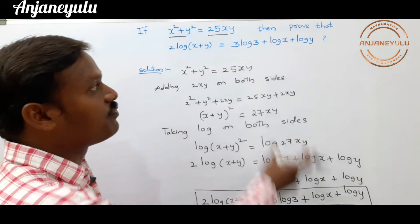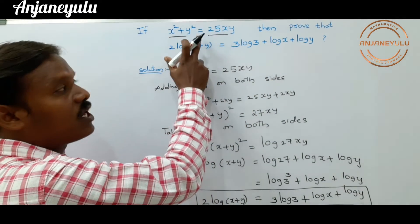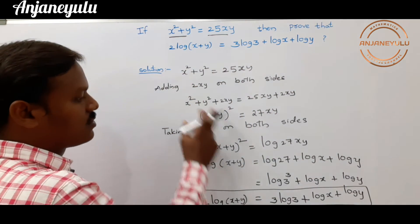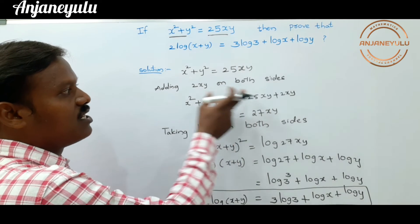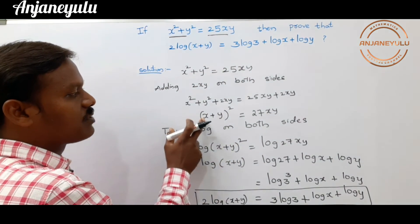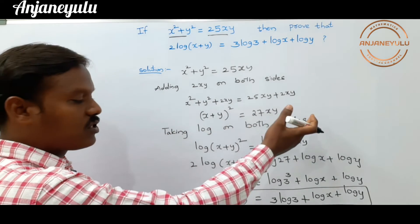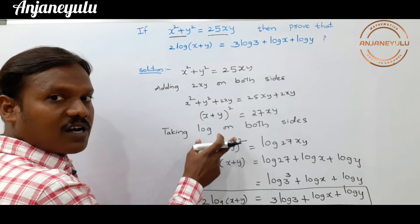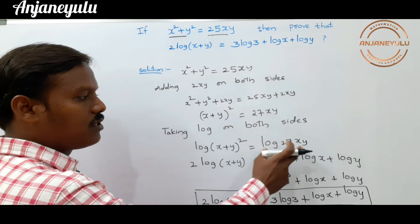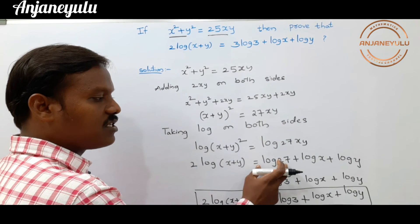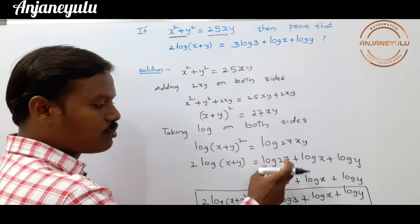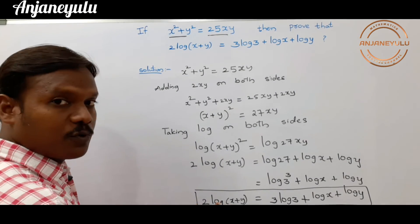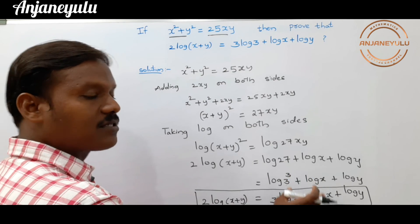This is our required solution. To summarize: given x² + y² = 25xy, adding 2xy on both sides gives (x + y)² = 27xy. Taking log on both sides and applying the power rule gives 2 log(x + y) = log(27xy). Using the product rule: log 27 + log x + log y. Writing log 27 as log 3³ and applying the power rule gives 3 log 3. Therefore the required proof is 2 log(x + y) = 3 log 3 + log x + log y.